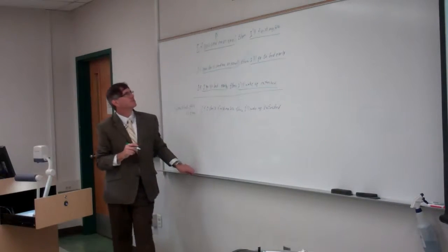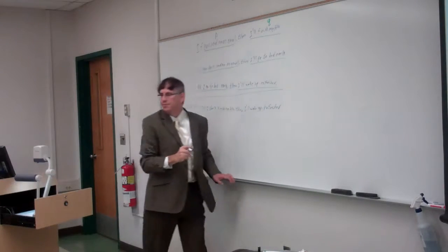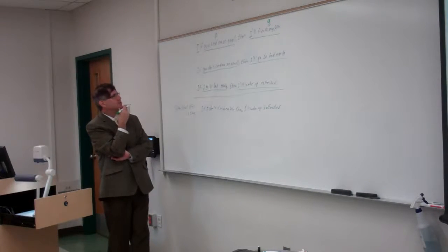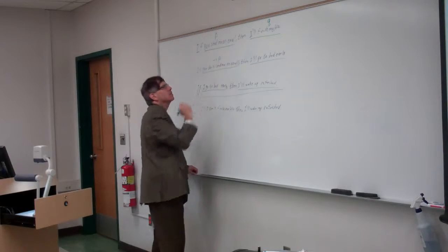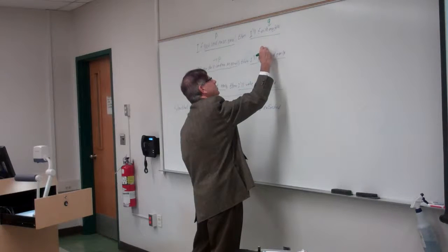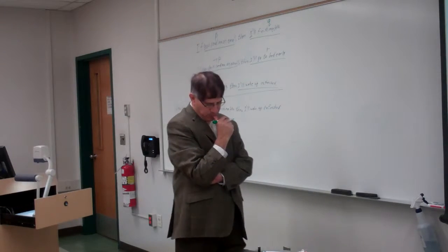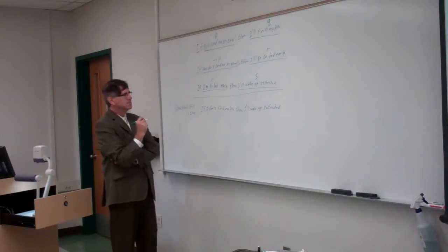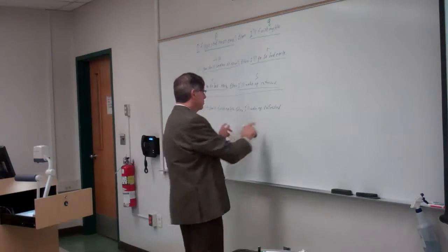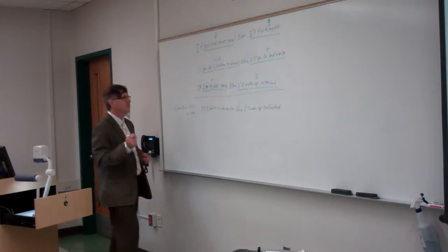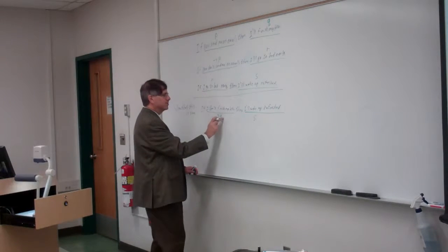Let's call this proposition P — P is the proposition that you send me an email; it could be true or false. Q is the proposition that I'll finish my homework. The negation of P, not P, means you don't send me an email. I'll go to bed early is another proposition — we'll call that R. If I go to bed early, R, then I'll wake up refreshed — we can call that S. So we want to use rules of inference and conclude: if not Q, then S.